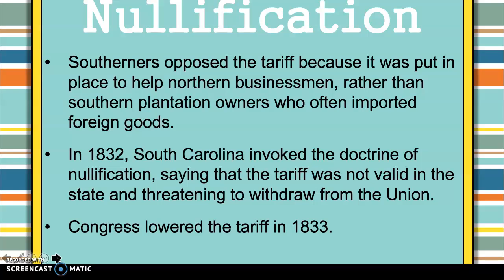So in South Carolina in 1832, they invoked the doctrine of nullification. Nullification means void — it is void. They said this tariff was not valid in their state. They threatened to withdraw from the Union. Because they threatened to withdraw, Congress lowered the tariff in 1833.